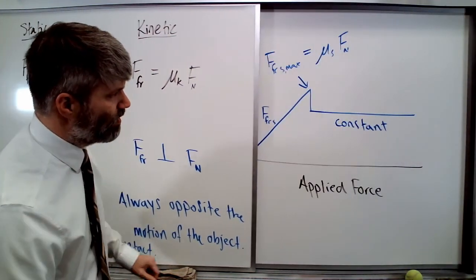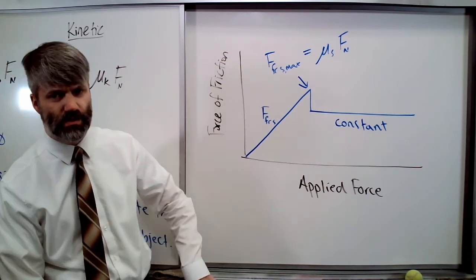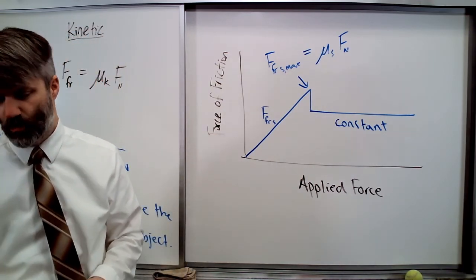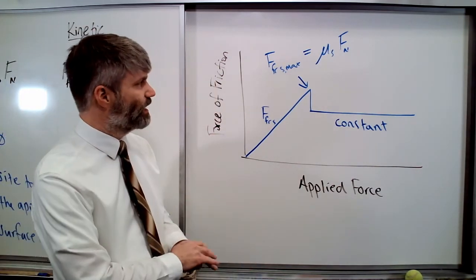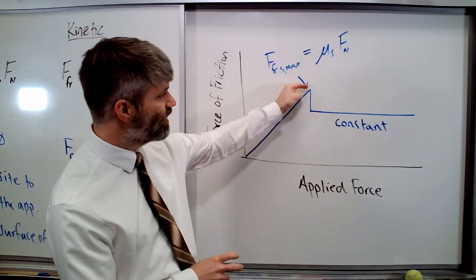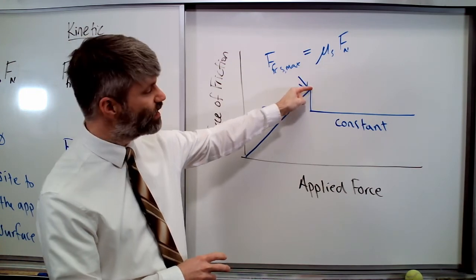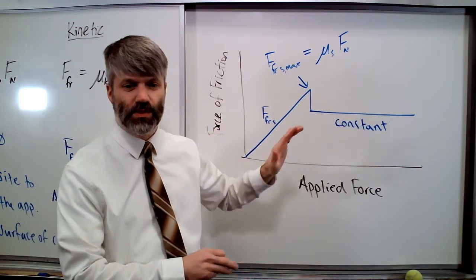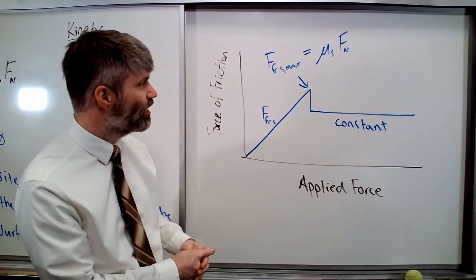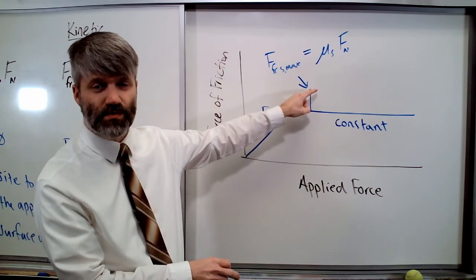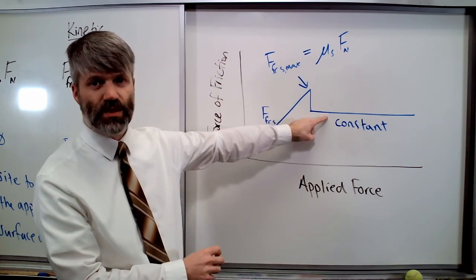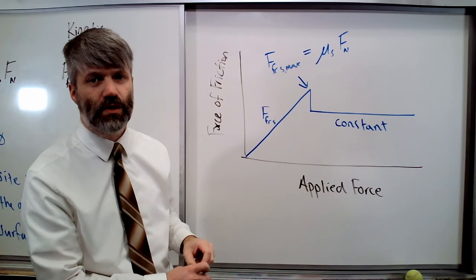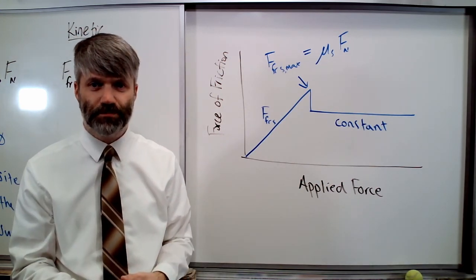Let's take a look once again at the graph. This informs our equations. If we've got to increase our force to get the object moving, how much force does it take to keep the object moving? There will be times when the force of kinetic friction equals my applied force in that direction. But that force is always going to be less than the maximum force of static friction, which means it is easier to keep a thing moving than it is to start a thing moving when friction is involved.